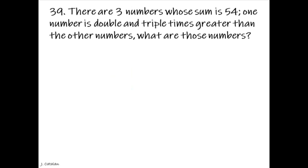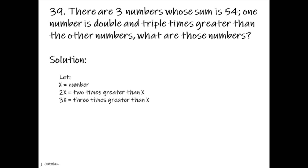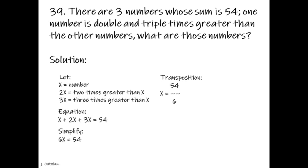There are 3 numbers whose sum is 54; one number is double and triple times greater than the other numbers. What are those numbers? Solution. Let x equal the first number, 2x equal twice x, and 3x equal three times x. Equation: x plus 2x plus 3x equals 54. Simplify: 6x equals 54. Transposition: x equals 54 divided by 6, so x equals 9. The numbers are 9, 18, and 27.